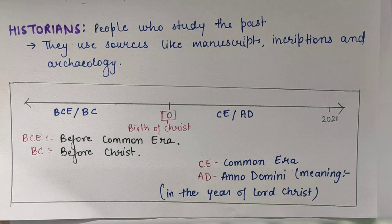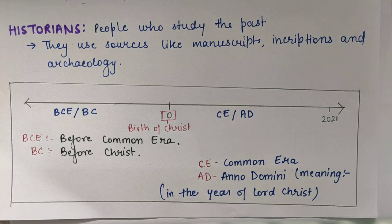Jo bhi manuscript mein likha hota hai, jo inscriptions mein likha hota hai, aur jo archaeological evidence hote hain — jo coins, jo weapons, jo tools hamein zameen se milte hain — unko study karke, phir us par history likhte hain.